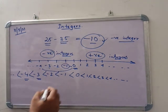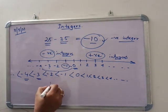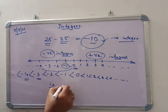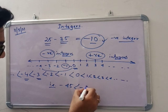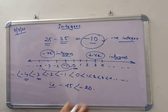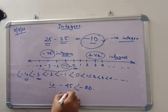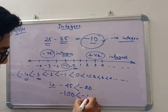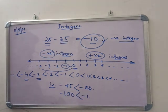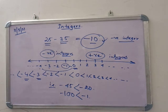For some different examples, we can say that minus 45 is less than minus 20, and minus 100 is less than minus 1. So when a number is closer to 0, it is greater than other negative numbers.